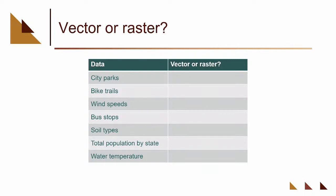Let's look at some examples — vector or raster? City parks: chances are that's a vector because it has a very discrete boundary. Bike trails: I would consider that vector and a line feature class. Wind speeds: I would pick a raster data set because they're very continuous — you don't know where the wind goes from 10 miles per hour to two; it's a gradient. Bus stops are discrete. You can make them polygons, but bus stops could also be points if you just want to show where the stop is.